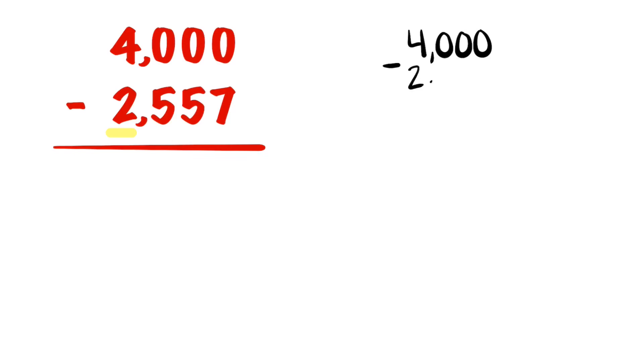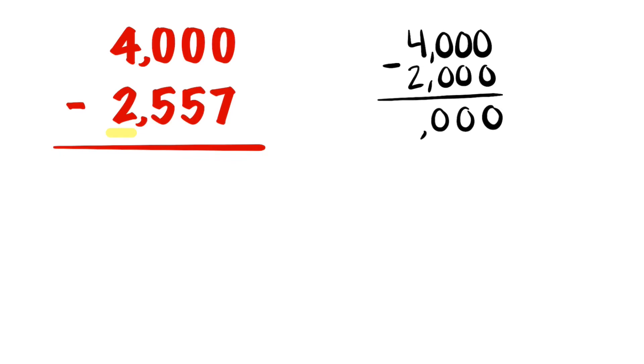We're going to begin by only writing the number at the top, which is 4,000, and now we're only going to subtract the thousands place, which is 2, which makes 2,000. We know that 0 take away 0 is 0, so we'll write that down three times, and 4 take away 2 is 2.